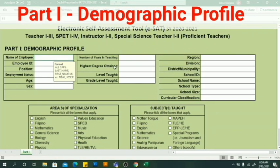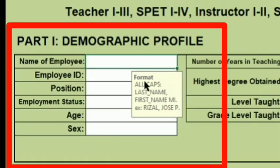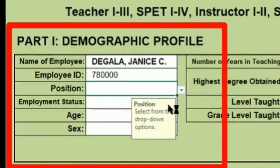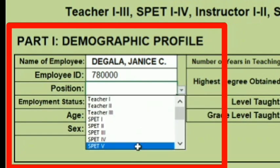We now have Part 1: Demographic Profile. Everything should be in ALL CAPS — last name, first name, and middle initial. Type your name, then your employee ID. For position, do not type it manually if you see a drop-down arrow on the side — use the drop-down to select.